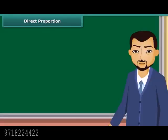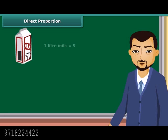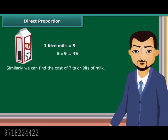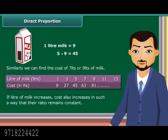Direct proportion: If the cost of 1 liter of milk is rupees 9, then what would be the cost of 5 liters of milk? It is rupees 45. Similarly, we can find the cost of 7 liters or 9 liters of milk. If liters of milk increase, cost also increases in such a way that their ratio remains constant.